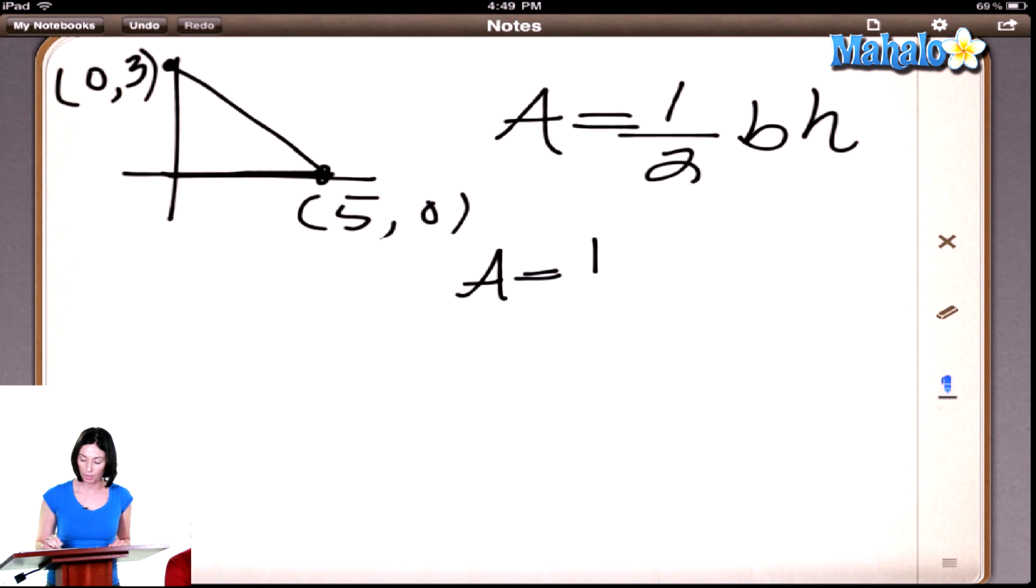So on this triangle, what do you think the base might be? Hmm. I don't know. How long is the bottom part? How long is this line right here that goes to the point (5,0)? How long do you think that is? As opposed to the (0,3) point? Yeah. It starts at (0,0) and it goes to (5,0). So how long do you think that line is?